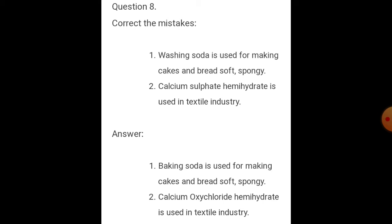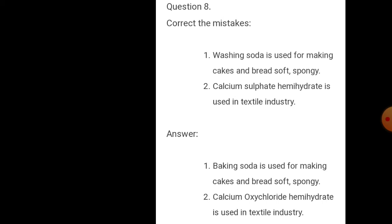Question eight: Correct the mistakes. Statement one: Washing soda is used for making cakes and bread soft and spongy. Correction: Instead of washing soda, it should be baking soda that is used for making cakes and bread soft and spongy. Statement two: Calcium sulphate hemihydrate is used in the textile industry. Correction: Instead of calcium sulphate hemihydrate, it should be calcium oxychloride (bleaching powder) that is used in textile industries.